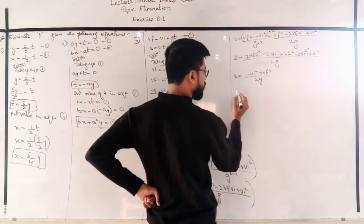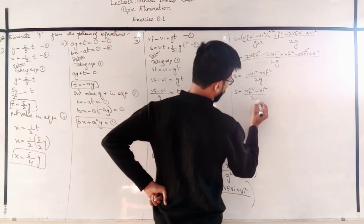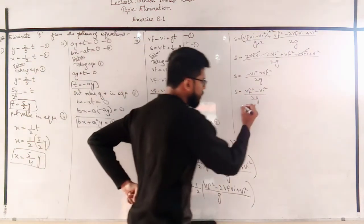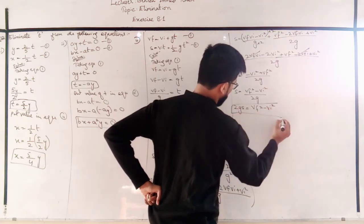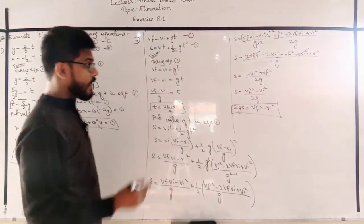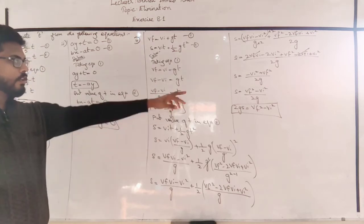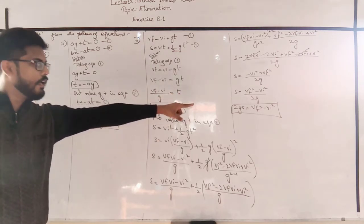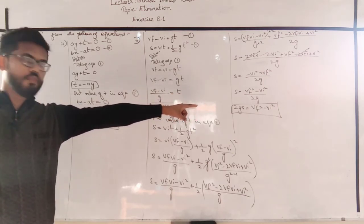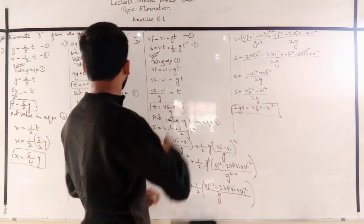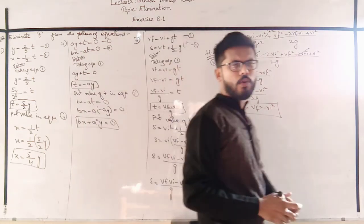Arranging: s = (vf² minus vi²) upon 2g. Multiplying both sides by 2g: 2gs = vf² minus vi². This expression has no T in it — T has been eliminated. And if you notice, this is also Newton's third equation of motion (2as = vf² minus vi², where here acceleration = g). Question 4 is complete.